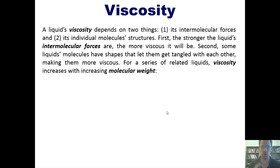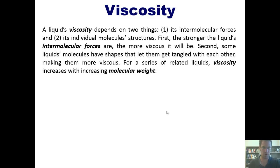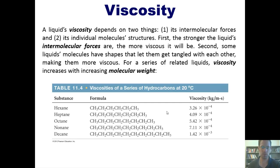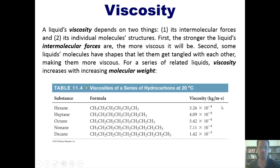A liquid's viscosity depends on two things. First, its intermolecular forces, which we talked about in an earlier lecture. And second, its individual molecules' structures. The stronger a liquid's intermolecular forces are, the more viscous it will be, because those individual molecules stick together and are therefore resistant to pouring. Some liquids' molecules have shapes that let them get tangled or intertwined with each other, making them more resistant to pouring and therefore also more viscous. For a series of related liquids, viscosity increases with increasing molecular weight. As seen in this table, we have a bunch of related molecules where the only difference is one more carbon in length and a corresponding number of hydrogens going from one molecule to the next, and the viscosity measures increase accordingly. So molecules that are longer can get intertwined with each other and therefore be slower pouring and more viscous.